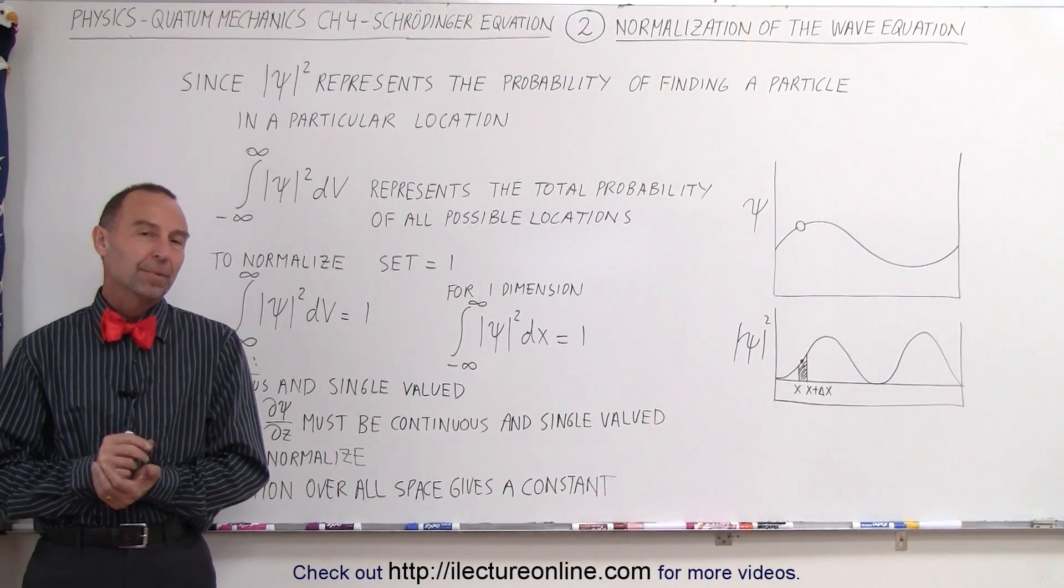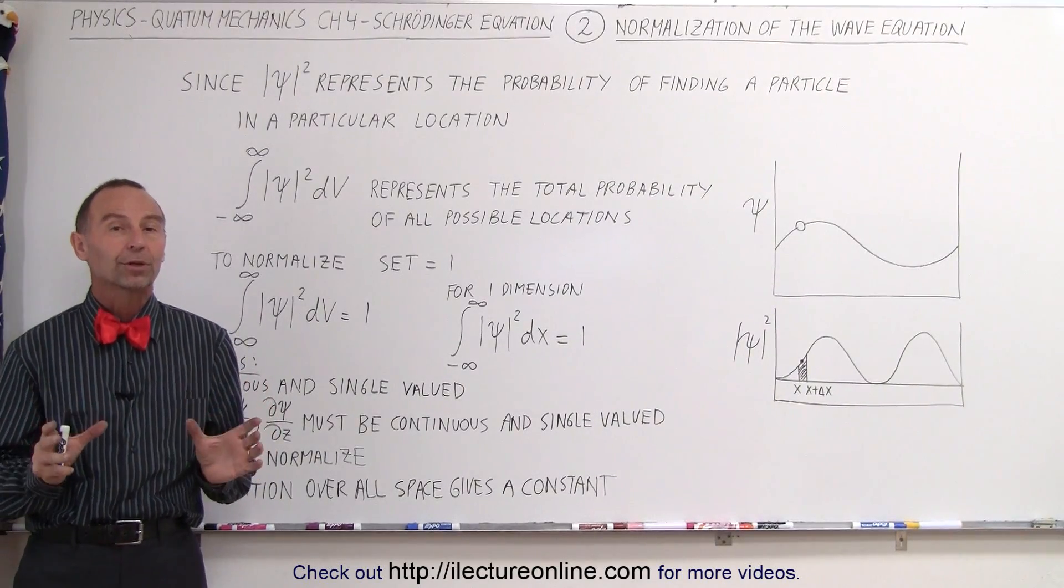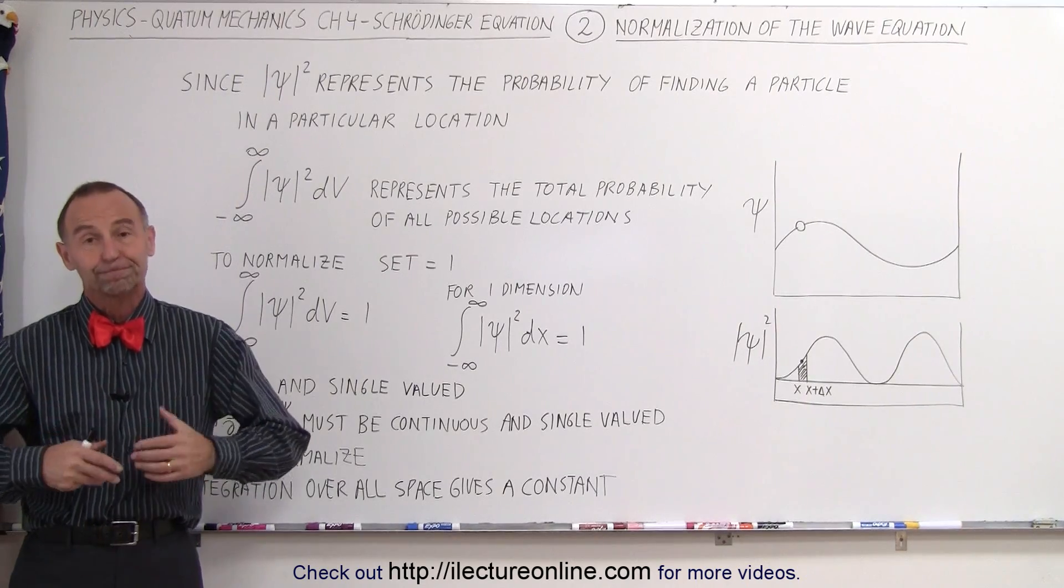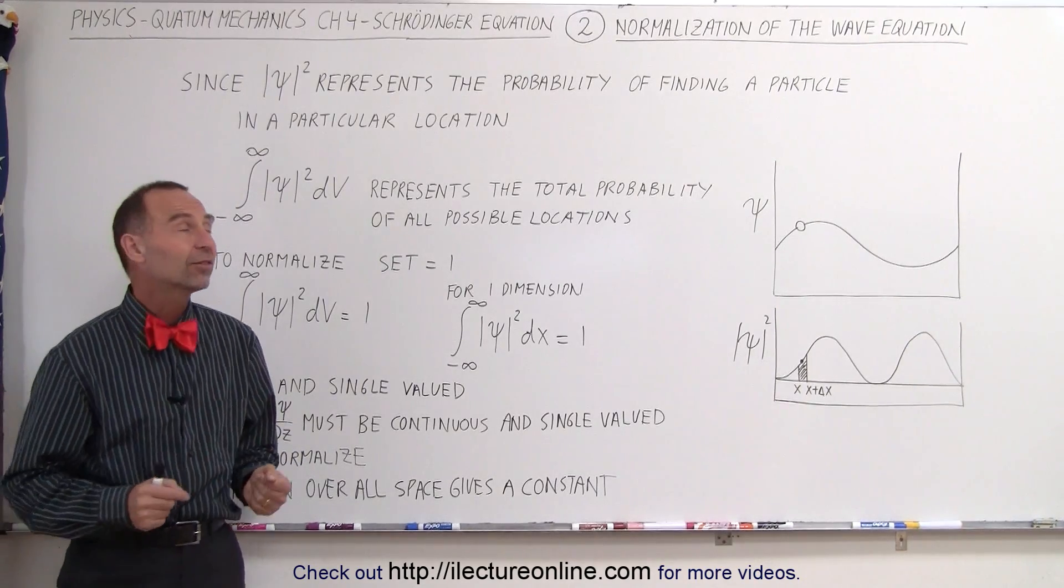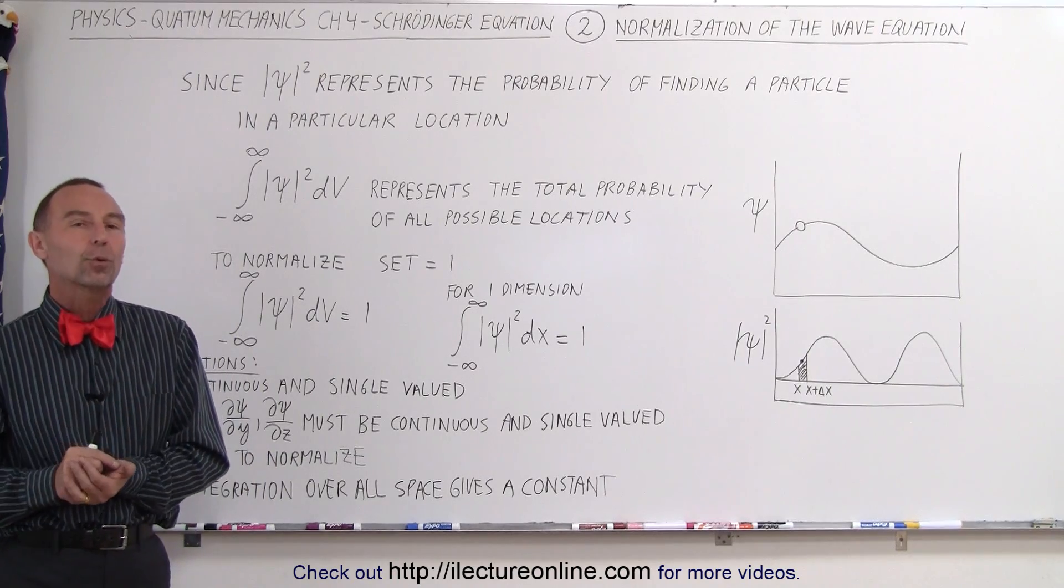Welcome to iLecture Online. The second part that's really important about Schrödinger equation, the wave equation on which it is based, is the fact that we need to be able to normalize the equation.